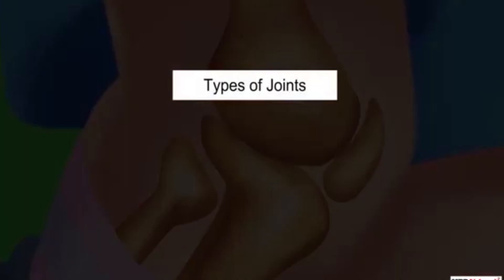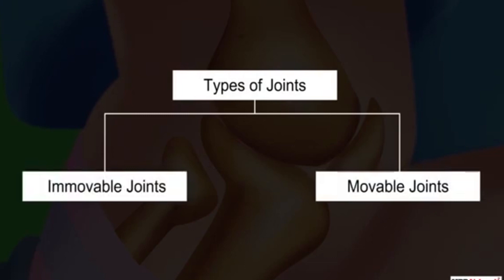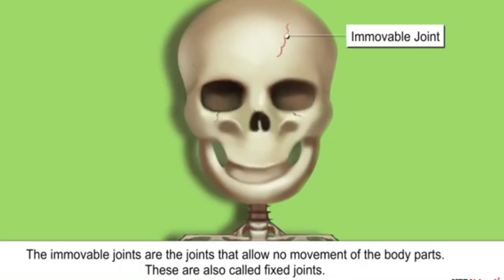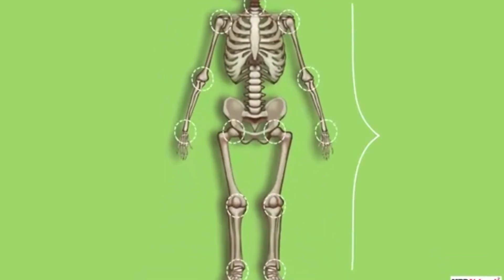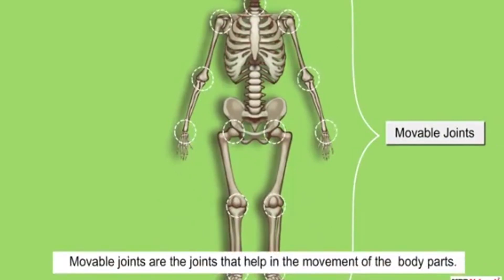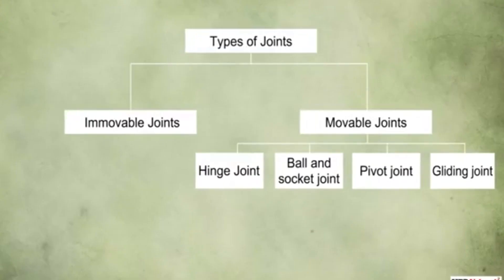Not all joints allow movement. On the basis of whether the joint helps in movement or not, joints can be categorized into two types: immovable and movable joints. Immovable joints are joints that allow no movement of the body parts; these are also called fixed joints, and such joints are found in the skull. All other joints found in the body are movable joints, and they help in the movement of the body parts.